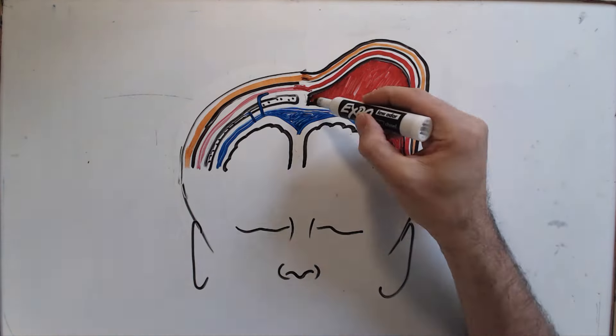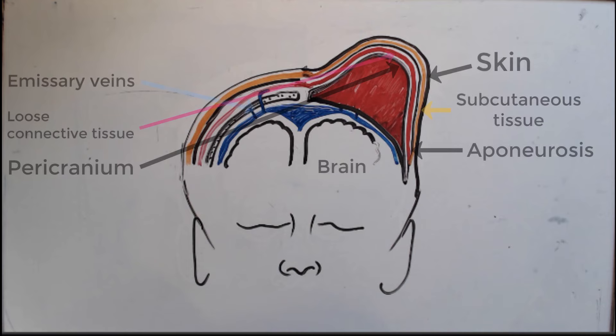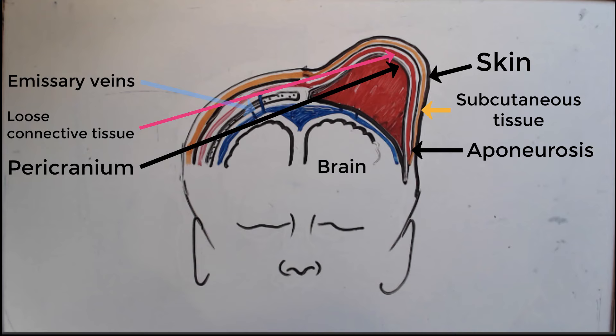Rupture of the emissary veins results in a buildup underneath the pericranium. As I mentioned in the introduction, the pericranium or periosteum of the bone is firmly attached to the sutures but loosely attached to the bones of the cranium.